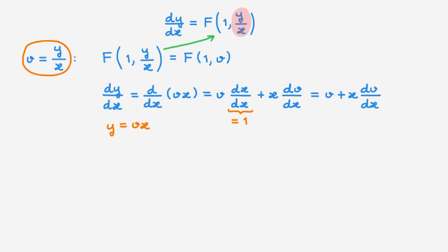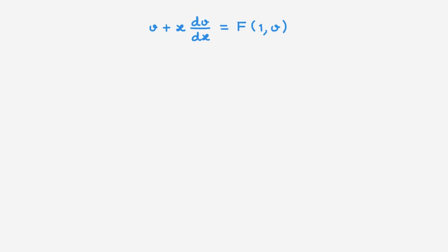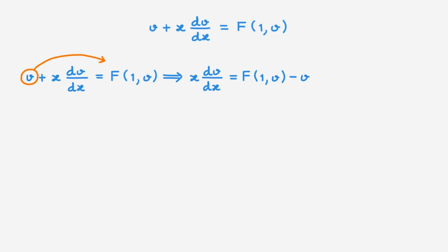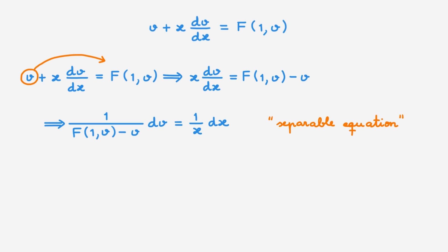Inserting the expression for f into the right-hand side and the chain rule expression into the left-hand side, we can rewrite our original differential equation in terms of x and v rather than x and y. This equation is now separable! We can move the v-term to the other side, and it becomes clear that all v-dependent terms are on one side and all x-dependent terms on the other. This is now clearly a separable equation, and we know how to solve separable equations — all we need to do is integrate both sides.